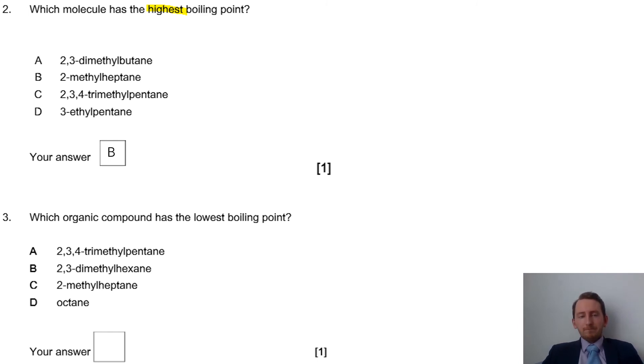Question three: which organic compound has the lowest boiling point? For this one, same argument but in reverse, so we're looking for which one has the most branching. This one here we're going to go for A. We've got trimethyl, so three lots of methyl groups. For B we've only got two lots, that's less branching. For C we've only got one lot, and for D we don't have any branching. Reverse argument from before - lowest boiling point, looking for the most branching, so therefore that would be A.